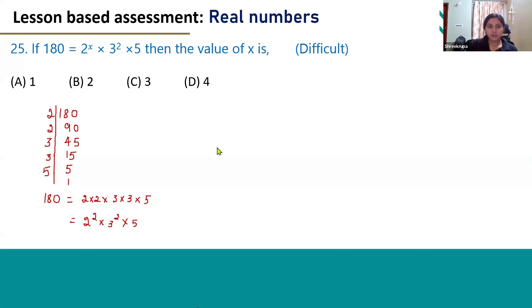If we compare this with the given function, that is 180 = 2^x × 3^2 × 5, with the function we got, that is 180 = 2^2 × 3^2 × 5, we can see the value of x is 2.